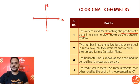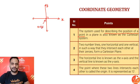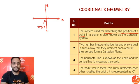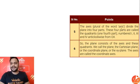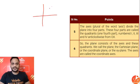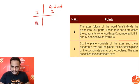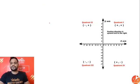The point where the x-axis and y-axis intersect is called the origin, denoted by O. The origin is the point of intersection of both coordinate axes. The axes divide the plane into four parts called quadrants: Quadrant 1, Quadrant 2, Quadrant 3, and Quadrant 4.